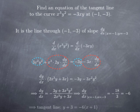So the tangent line passes through the point (negative 1, negative 3) with slope negative 6, giving the equation y plus 3 equals negative 6 times (x plus 1).